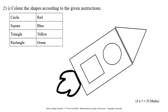This is your second question. Can you all see your paper? Now we have to colour the shapes according to the given instructions. You'll have to colour the circle in red colour. Find the circle and colour it in red colour.